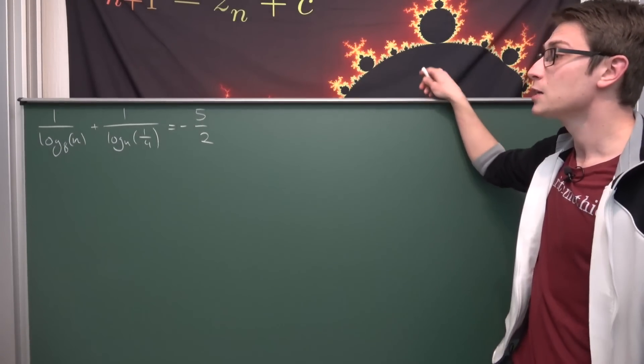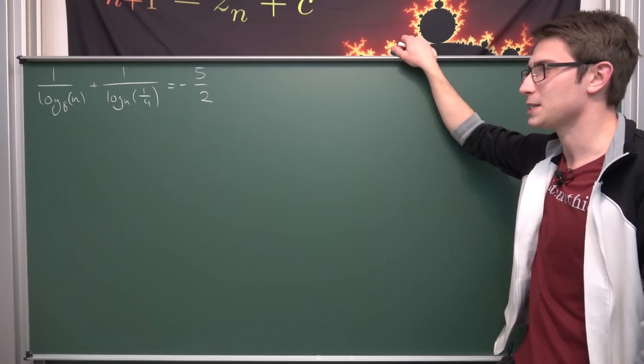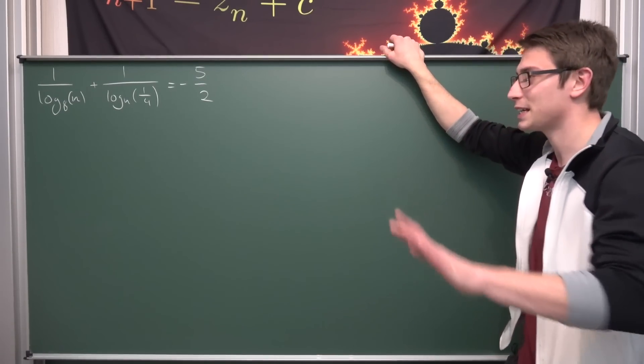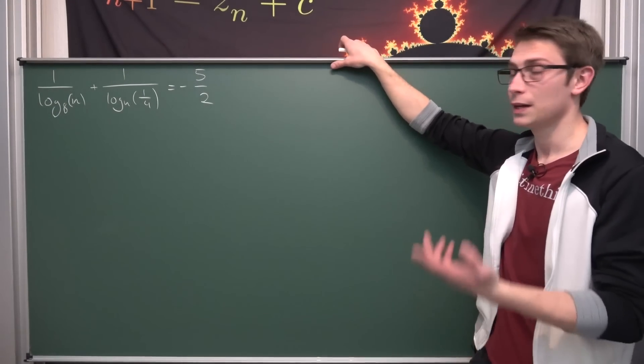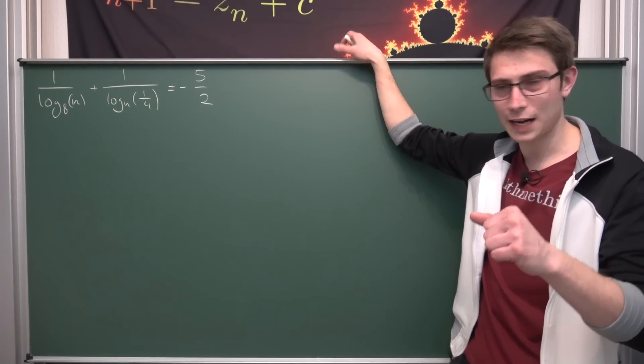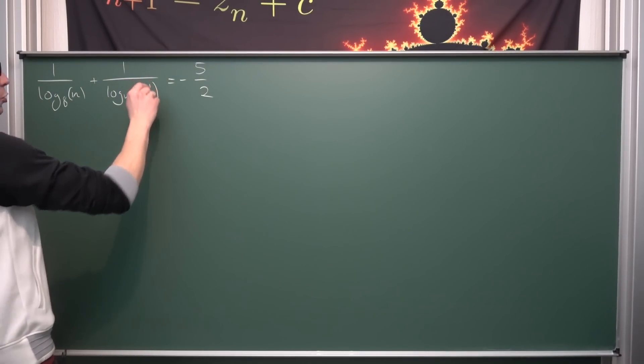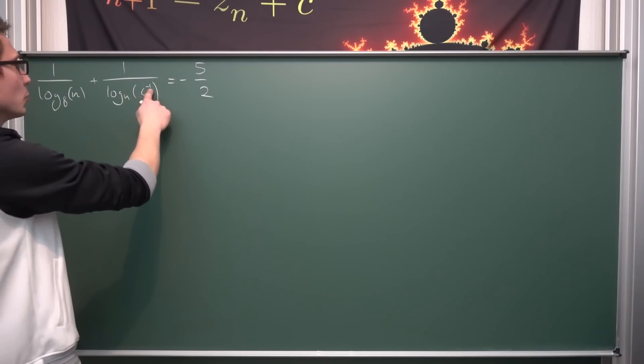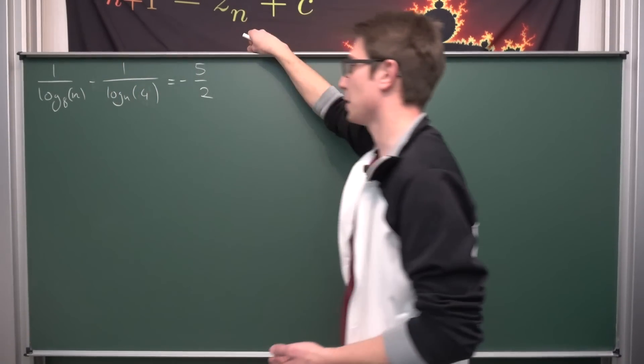And now we are going to dive right in. So the first thing that actually comes to my mind is to do a change of base. No, actually the first thing that comes to my mind is to get rid of the 1 quarter here. 1 quarter is nothing other than 4 to the negative 1 power. By using logarithm properties we can drag the negative 1 as the exponent to the front. This is actually looking quite a bit better.